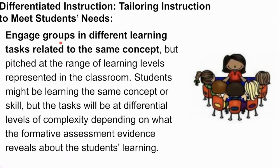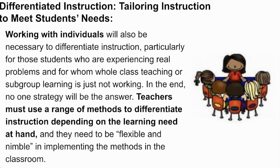Another way that we can differentiate instruction is to engage groups in different learning tasks related to the same concept, but always pitched at the range of learning levels represented in the classroom. Students might be learning the same concept or skill, but the tasks will be at different levels of complexity depending on what the formative assessment evidence reveals about students' learning. One of the most powerful ways to differentiate instruction is to work with individual students — particularly those experiencing real problems for whom whole-class teaching or subgroup learning is not working. No one strategy for differentiating instruction will be the answer, so teachers must use a range of methods and be flexible and nimble in how they implement instruction.